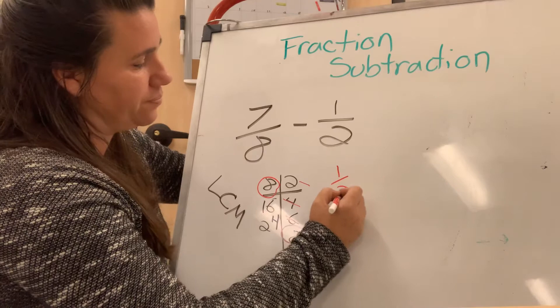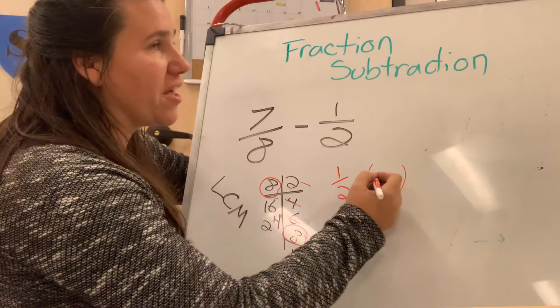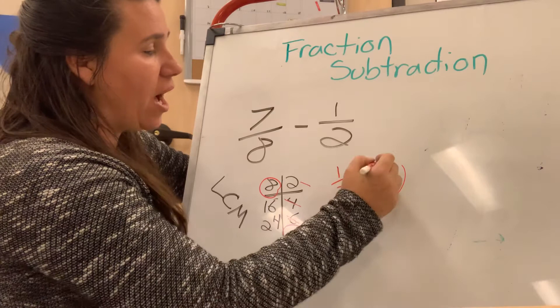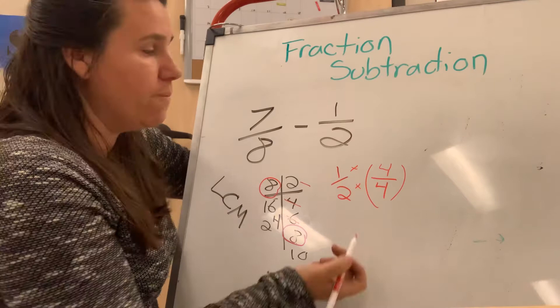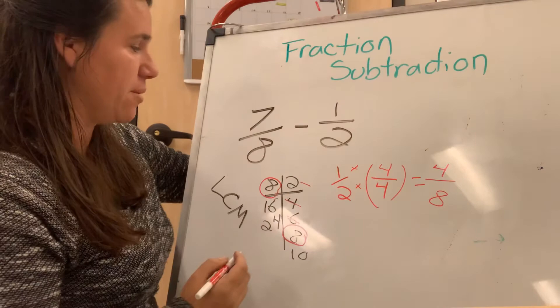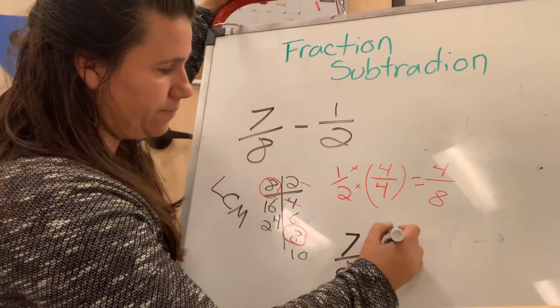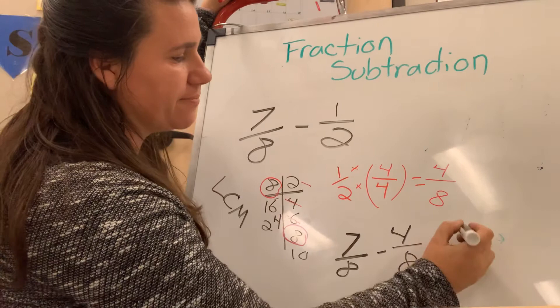So I ask myself, two times what is eight? Well, I know two times four is eight. I also know the rule that anything times one is always itself. So I can multiply one-half by four over four, which is the same as one whole, to get an equivalent fraction. So two times four is eight. Four times one is four. So I could change this up here to seven-eighths minus four-eighths. And I would get three-eighths. There you go. Now we know how to subtract with fractions and add with fractions.